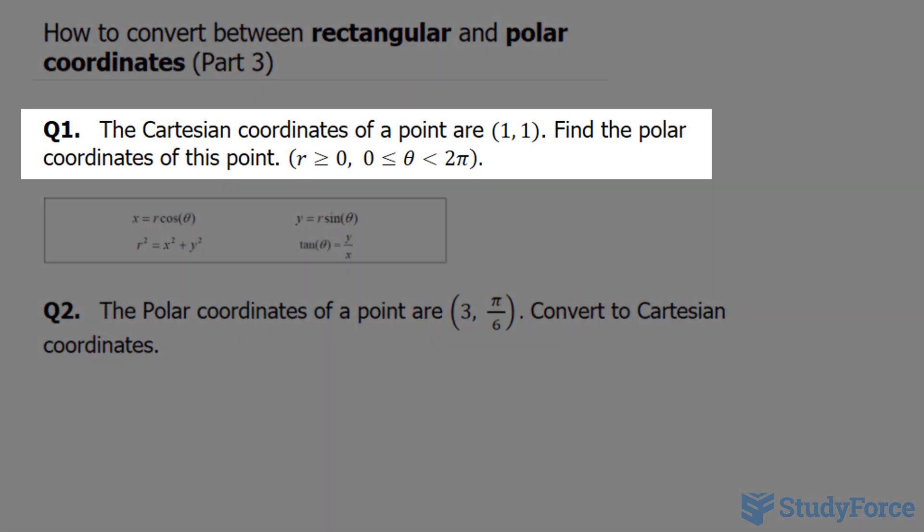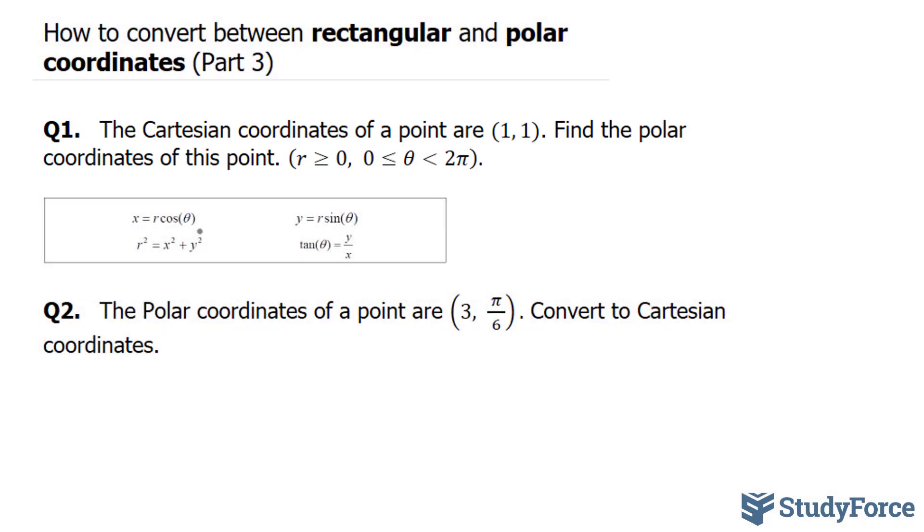The question reads, the Cartesian coordinates of a point are one and one. Find the polar coordinates of this point. To do this, we'll need to use these following two formulas, where r squared is equal to x squared plus y squared and tangent theta is equal to y over x.